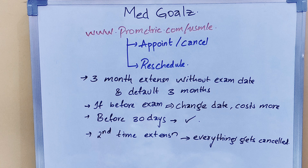The 3-month periods are set as default — for example, if you choose January, February, March and then extend the next month, it will automatically become April, May, June. If you want to change the exam date before 30 days of the examination, it costs more, but within 30 days there is no cost. If you want to do a second extension, the whole process gets cancelled.